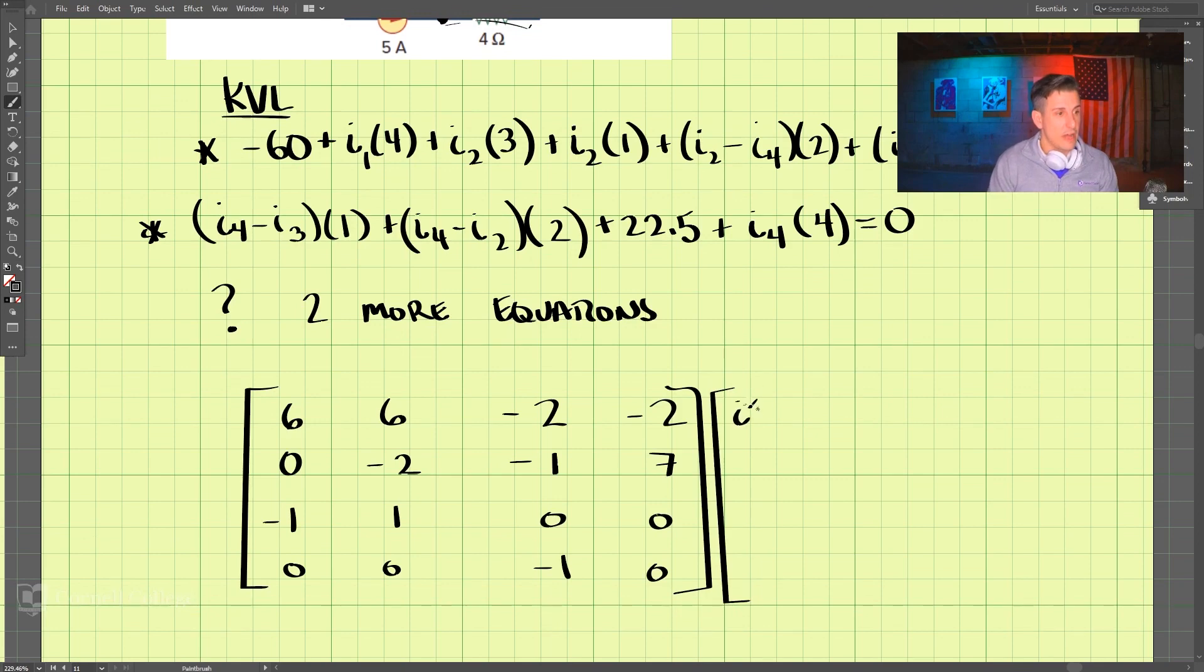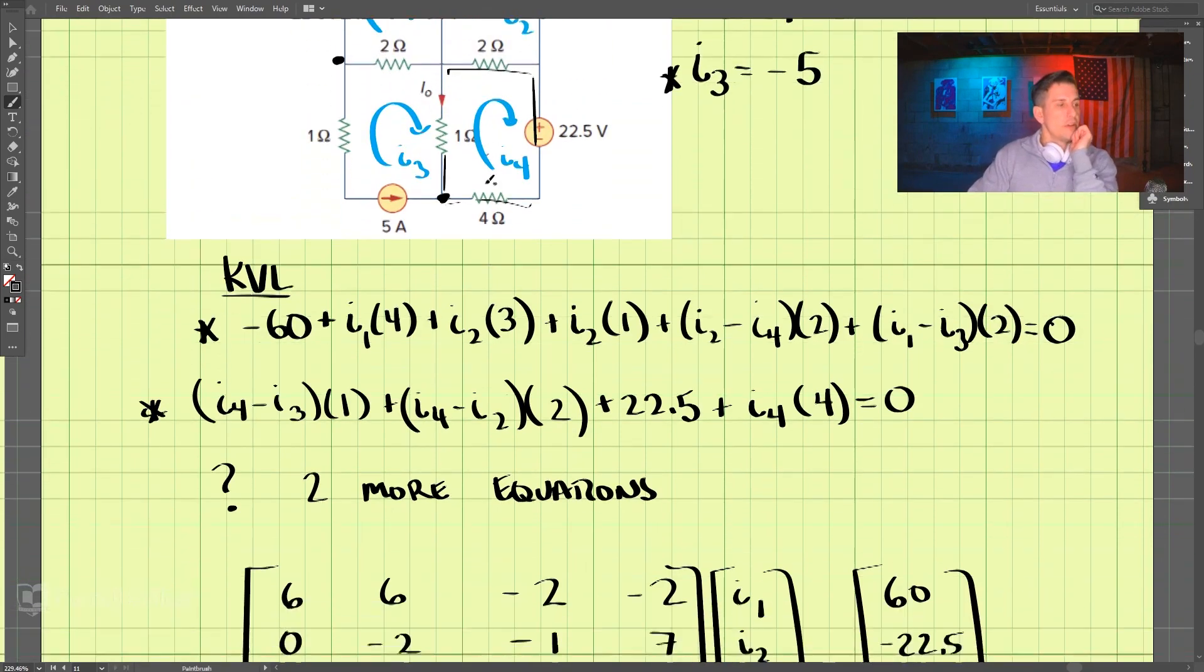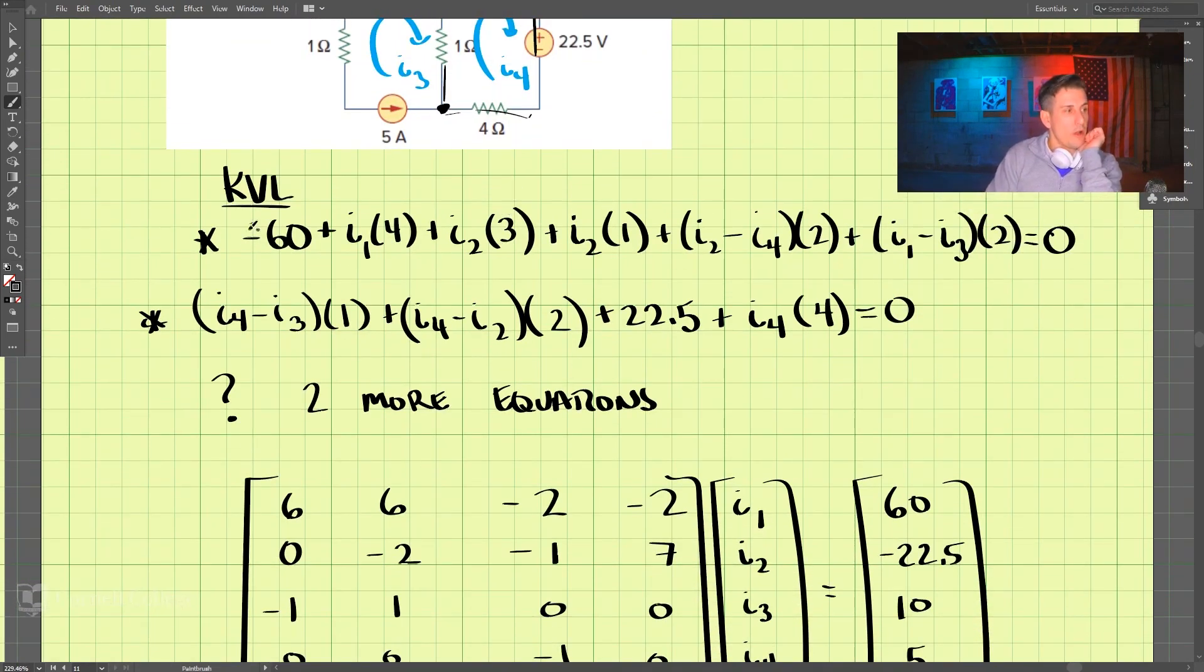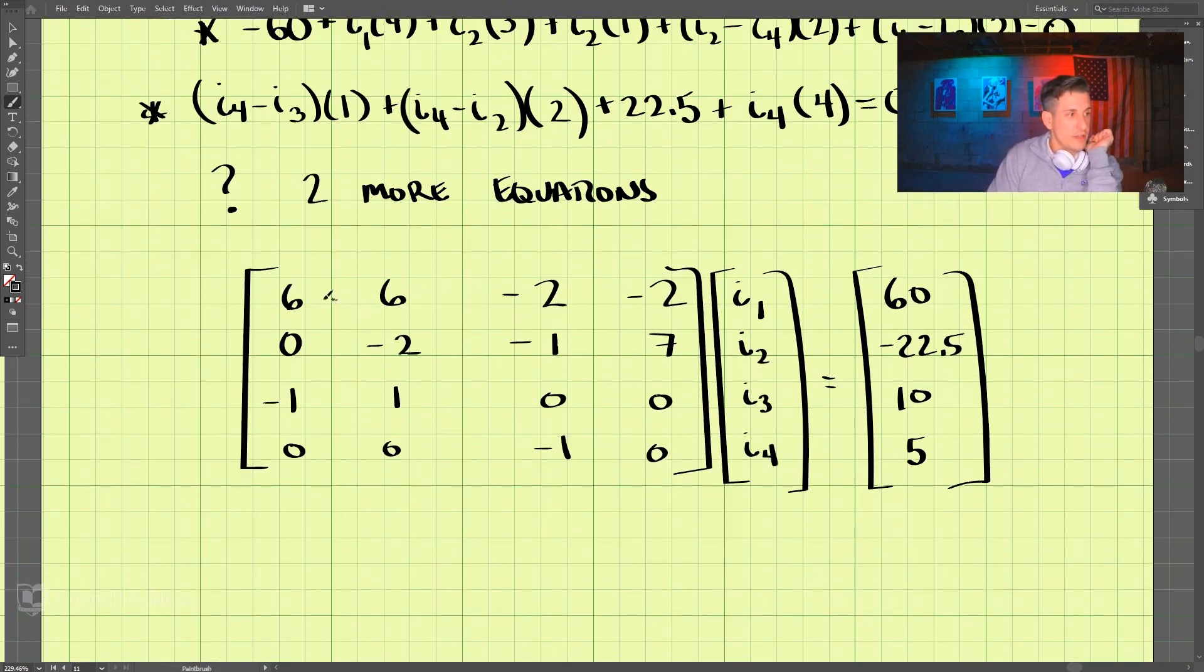So we have I1, I2, I3, and I4, and this is going to be 60, negative 22.5, 10, and 5. This represents these equations. For example, this equation here represents 6 times I1, 6 times I1, plus 6 times I2, minus 2 times I3, minus 2 times I4, is equal to 60.